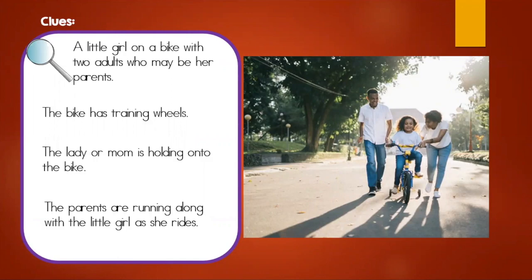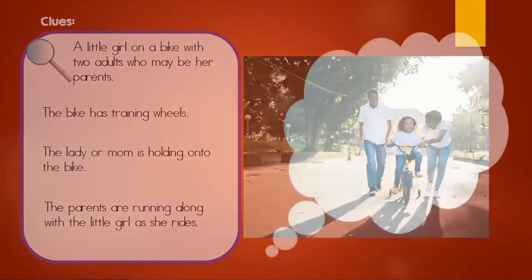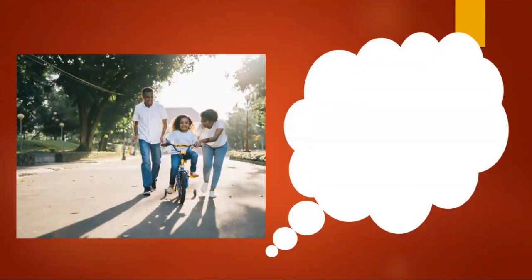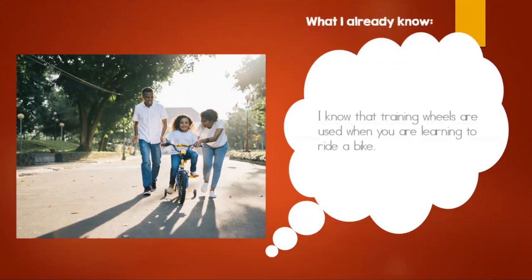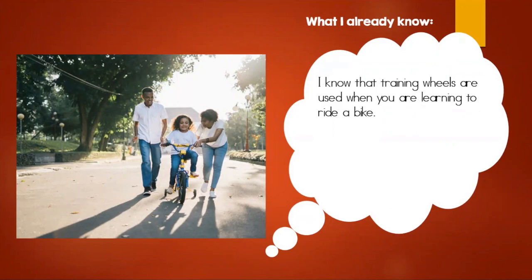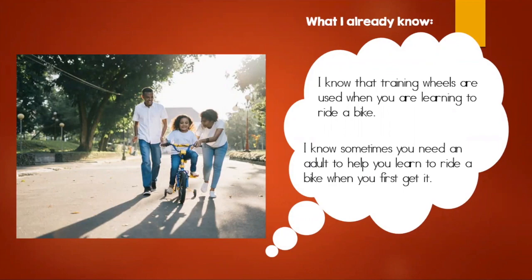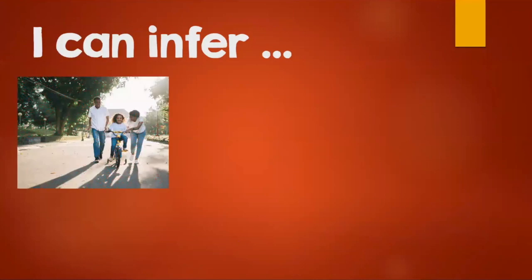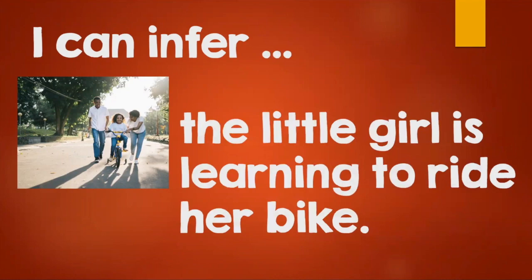Did you see any other clues? Great job. Now, let's think about what we already know. I know that training wheels are used when you are learning to ride a bike. I also know that sometimes you need an adult to help you learn to ride a bike when you first get it. Let's put our clues and what we already know together to make an inference. I can infer that the little girl is learning to ride her bike. Awesome thinking, boys and girls!